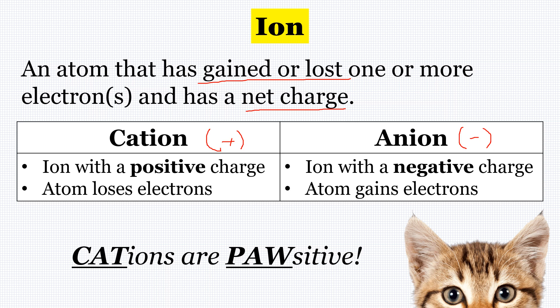An easy way to remember which one's which: a cation is positive. Cat-ions are positive — think about cats. Cats have paws, they're positive. So a cation is an ion with a positive charge.